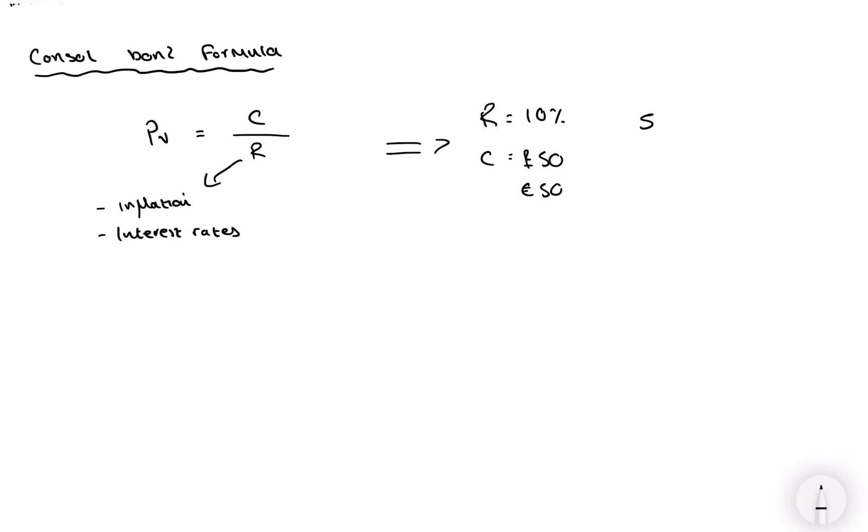We'll put 50 over the rate, 1.1. 1.1 meaning 10% equals, quick maths, £500.